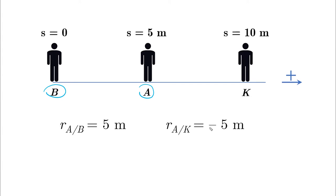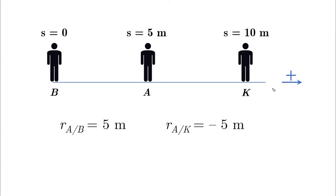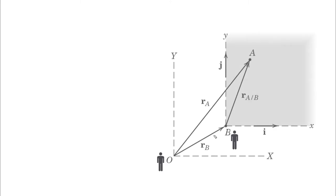So you probably guessed that A is 5 meters to the left of K, so he is minus 5 meters away because the positive direction is to the right. Your guess is right — but how did you come up with it? This is the starting point for defining relative motion.